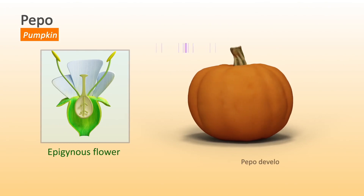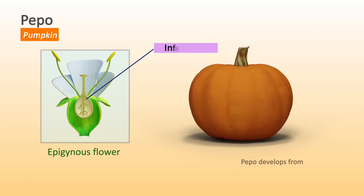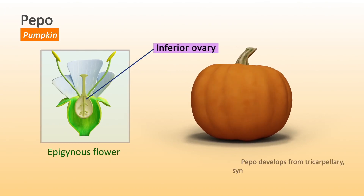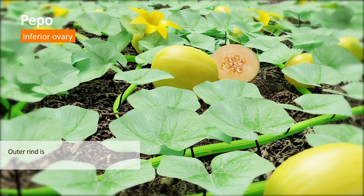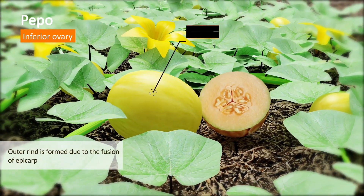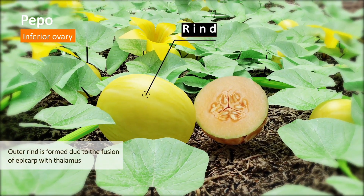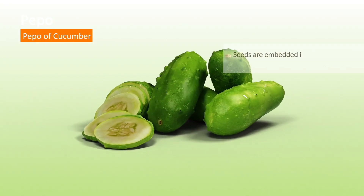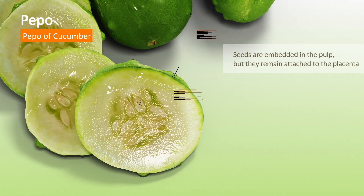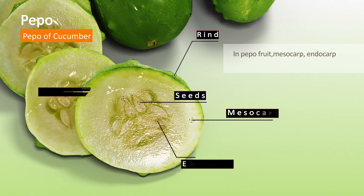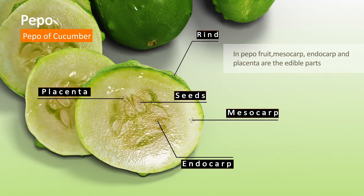Pepo: Pepo develops from a tricarpellary, syncarpous, unilocular, inferior ovary. Epicarp and thalamus are fused to form the outer rind. Seeds are embedded in the pulp, but they remain attached to the placenta. In Pepo, the mesocarp, endocarp, and placenta are the edible parts.